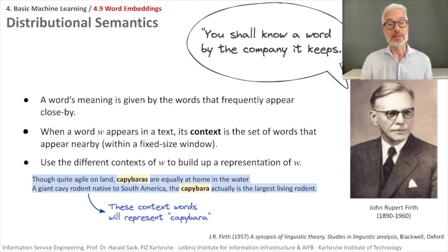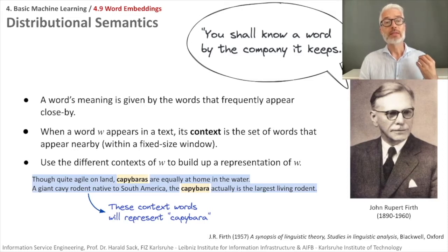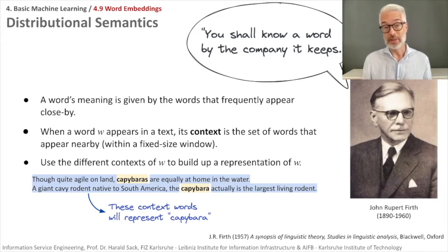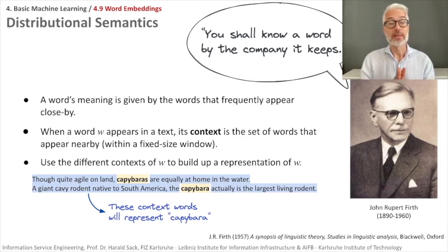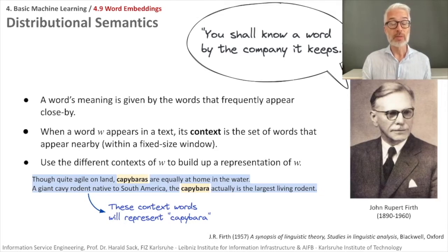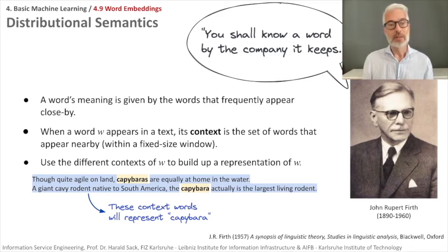This is one of the most successful ideas of statistical natural language processing and is referred to as distributional semantics. To formalize that: whenever a word w appears in a text, its context is the set of words that appear nearby — nearby means in a fixed-size window, going three words left and three words right from a center word. We can use these different contexts of word w to build up a representation of w, which will be our word vector.